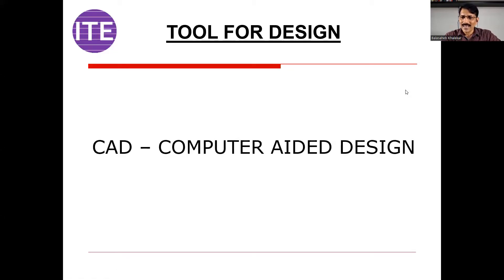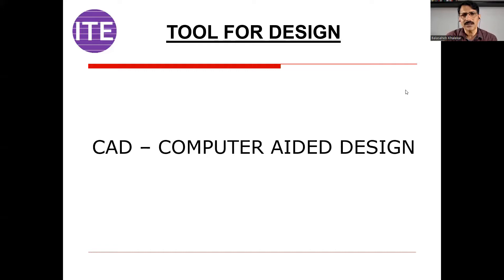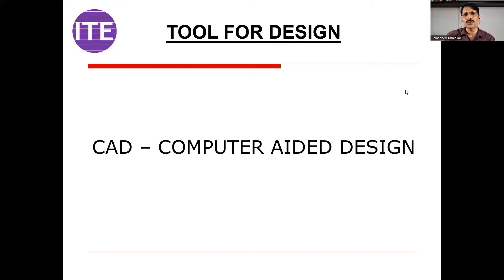First we have to understand what is CAD, and this slide is mainly for freshers. CAD means Computer Aided Design. Some mechanical engineers have confusion — they think that AutoCAD means CAD. That is not true. Computer Aided Design means it helps the design activity; it is a tool. Another confusion is that engineers say 'I know CATIA, so I am a Design Engineer.' That is not true. You are just a user, and anybody can use this tool. Design engineer is one step above this.